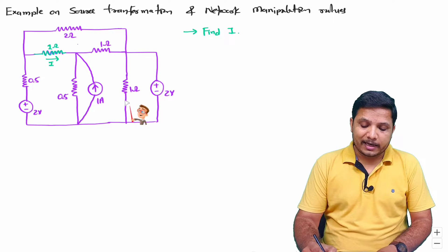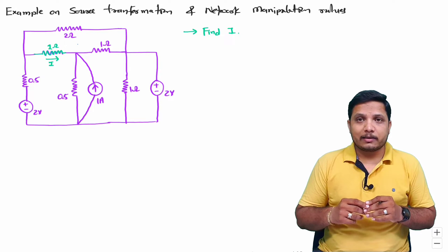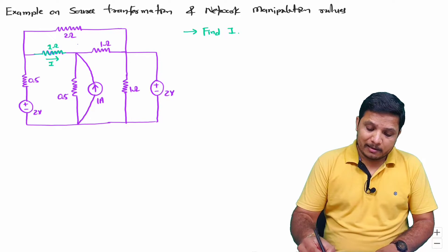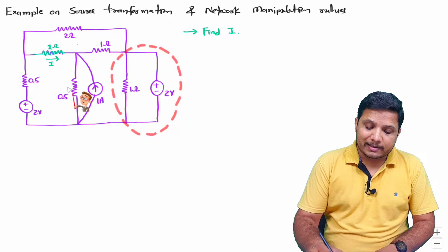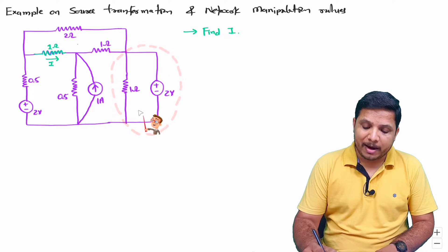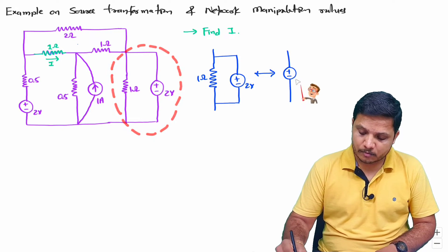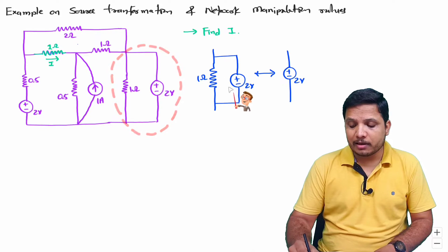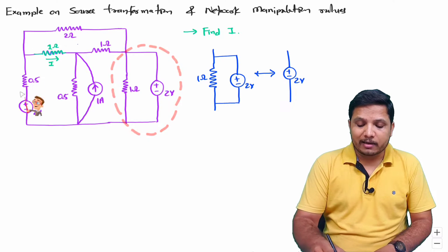Whenever you are given any circuit, first we need to see if there is a resistor connected in parallel with a battery, or a resistor connected in series with a battery. In this case, a resistor connected in parallel with this battery won't affect the entire circuit. So you can replace the parallel combination of a resistor and battery by the battery alone.